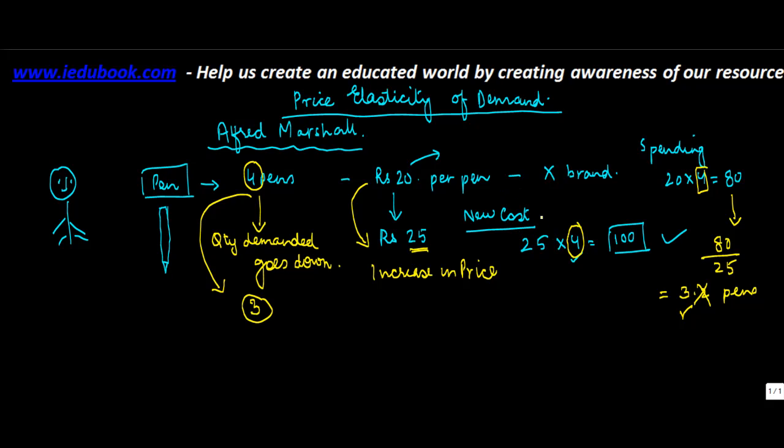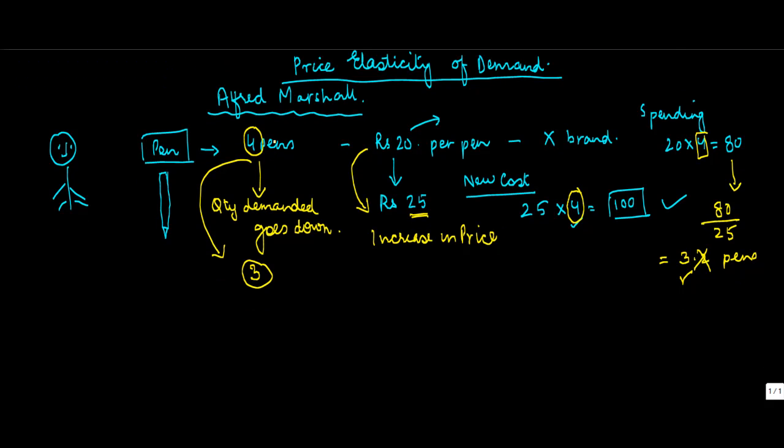Now, it depends on a case-to-case basis. But this change in the quantity demanded, as the price of the goods moves up and down, it could have been reversed also. Let's say this pen would have been available for 10. Then, maybe instead of 4, you would have said, let me buy 5 pens.